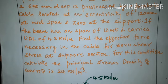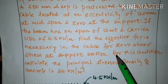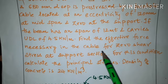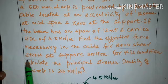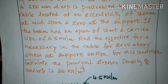It is a similar type of problem to what we discussed in the previous session. Again it is a rectangular cross section with a parabolic cable profile, but one important change: we have to find the effective force necessary — the effective prestressing force P — in the cable for 0 shear stress at the support section. This word is very important: at support section.